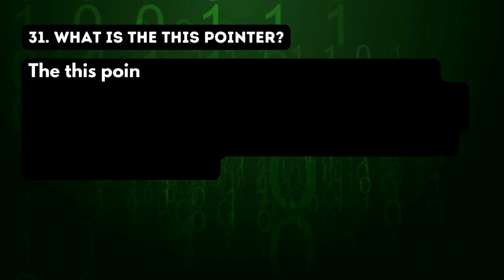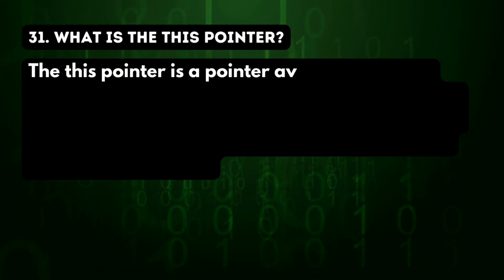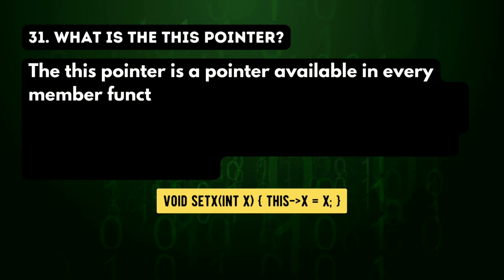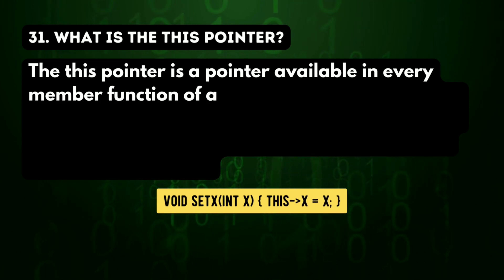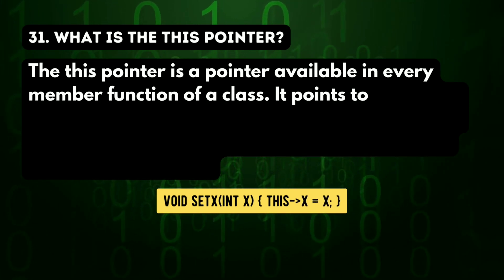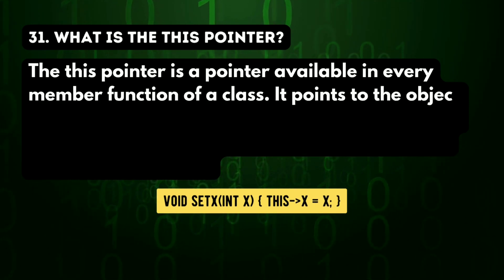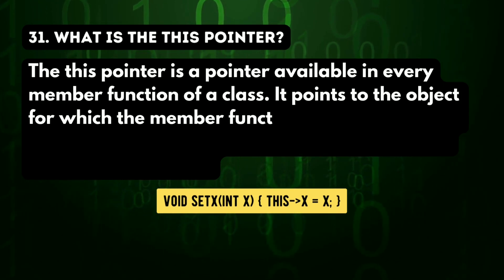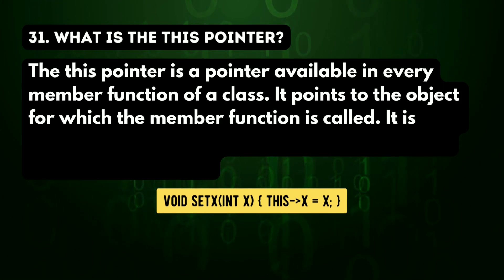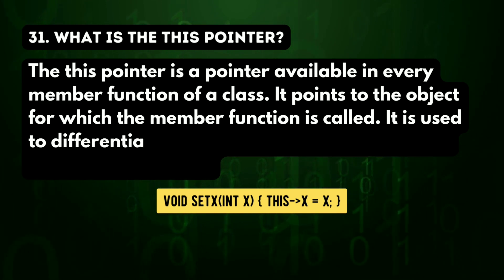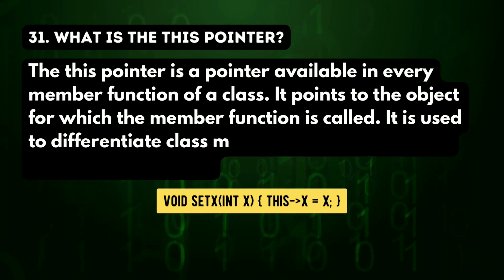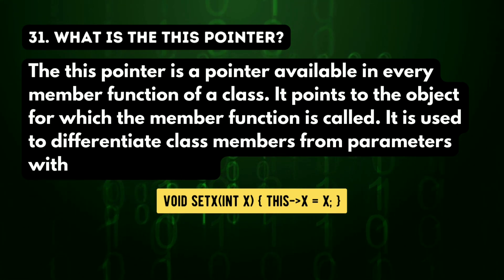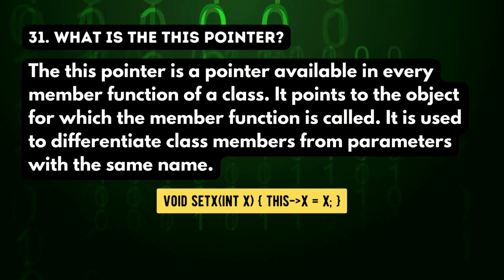31st question: what is the this pointer? The this pointer is a pointer available in every member function of a class. It points to the object for which the member function is called, and is used to differentiate class members from parameters with the same name.